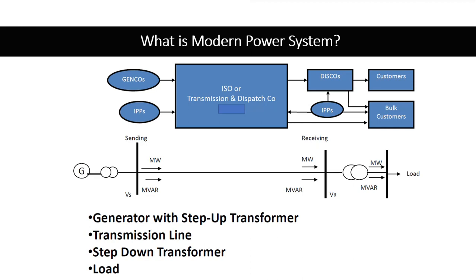Then we have distribution companies. These distribution companies are responsible for distributing the power generated by the power plants. On the consumer side, we can have many kinds of consumers. One is the local consumer, the household consumer, residential consumer. Then there can be bulk consumers like big factories or big industrial facilities. So this is the basic structure of a power system.